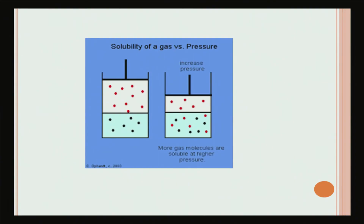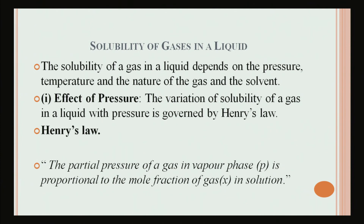Gases are generally soluble in liquids. Aquatic life exists because gases are soluble in water — oxygen is sufficiently soluble in water to allow the survival of aquatic life in ponds, rivers, and oceans. Gases like carbon dioxide and ammonia are highly soluble in water. The solubility of a gas in liquid depends on pressure, temperature, and the nature of the gas and solvent. When pressure is applied, more solute particles can dissolve in the solvent.